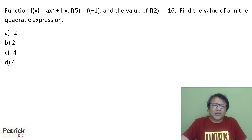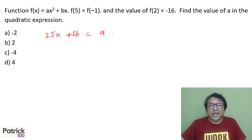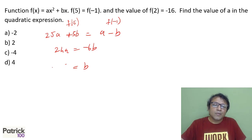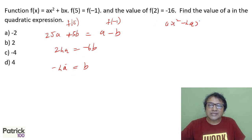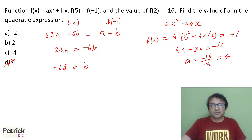Given f(x) equals ax² plus bx, f(5) equals f(-1), and f(2) equals -16, find a. Substituting: 25a plus 5b equals a minus b, giving 24a equals -6b, or b equals -4a. The equation becomes ax² minus 4ax. For f(2): 4a minus 8a equals -16, so -4a equals -16, giving a equals 4, option B.